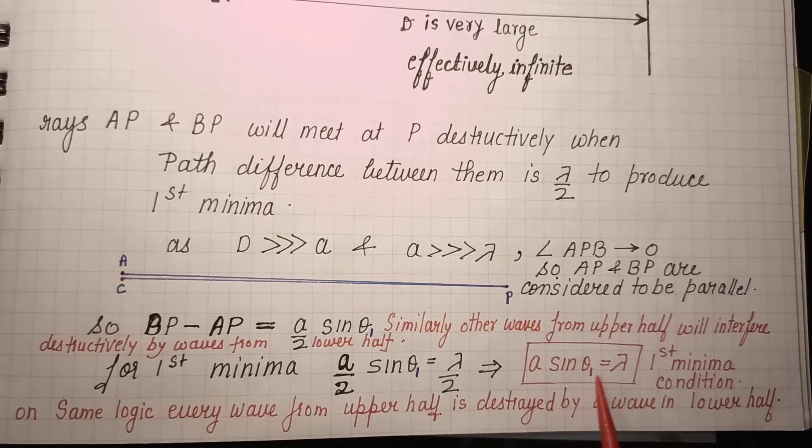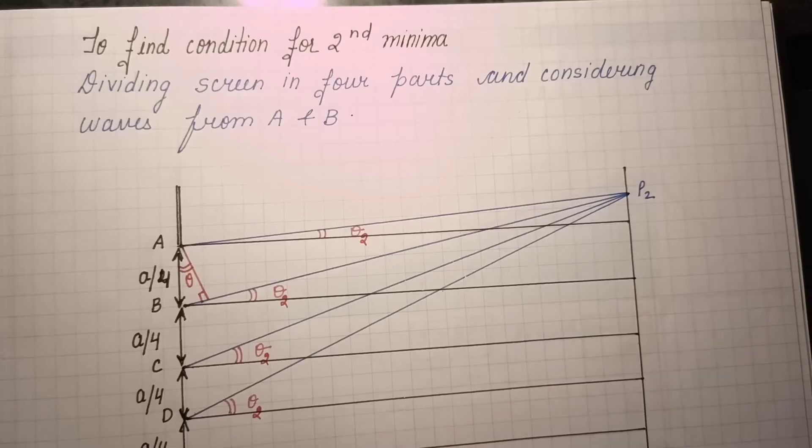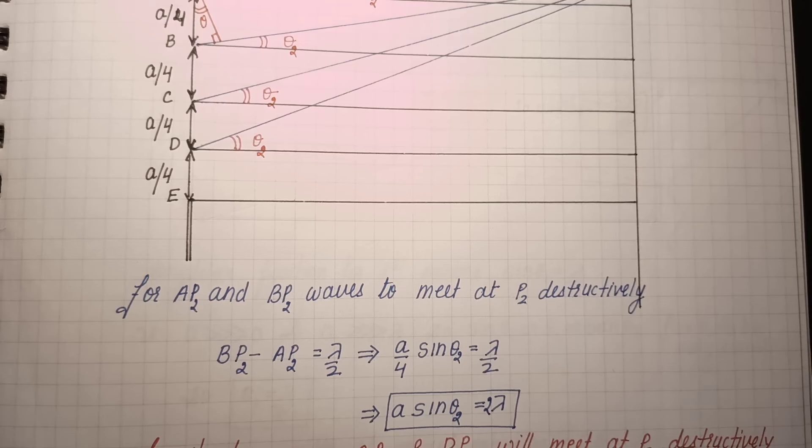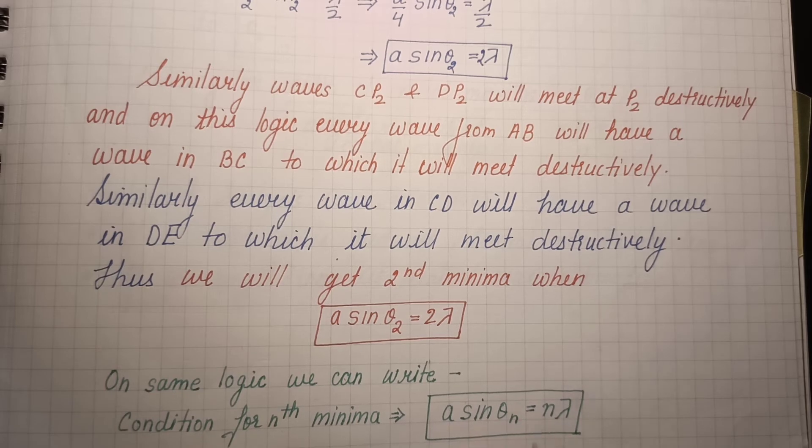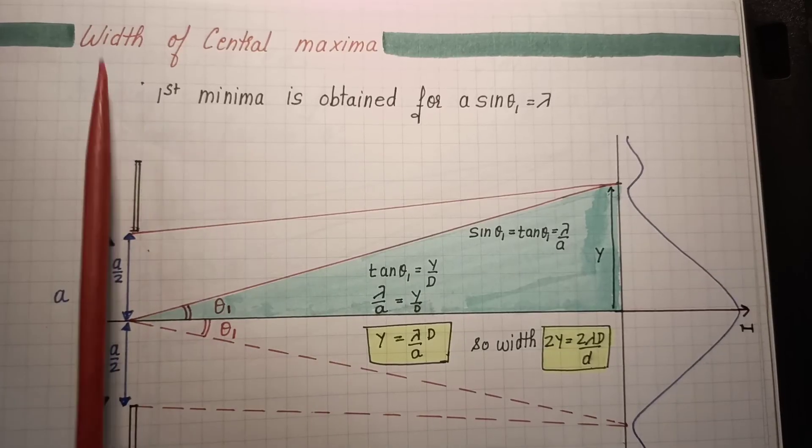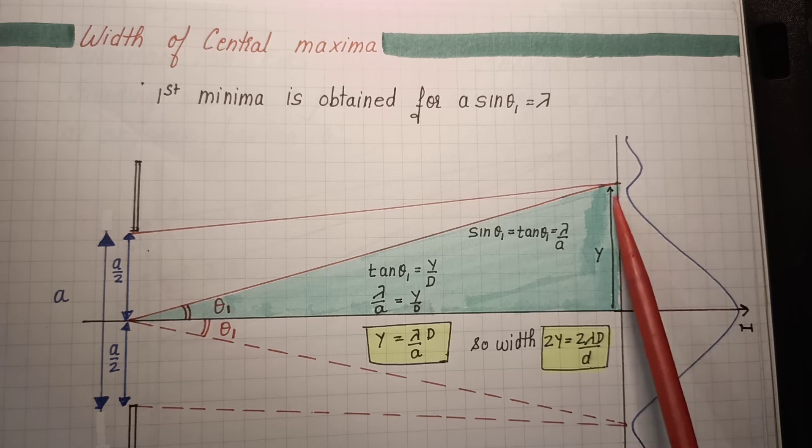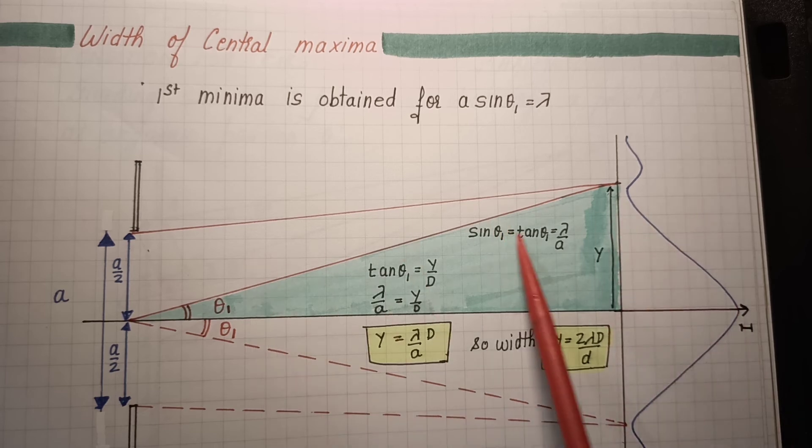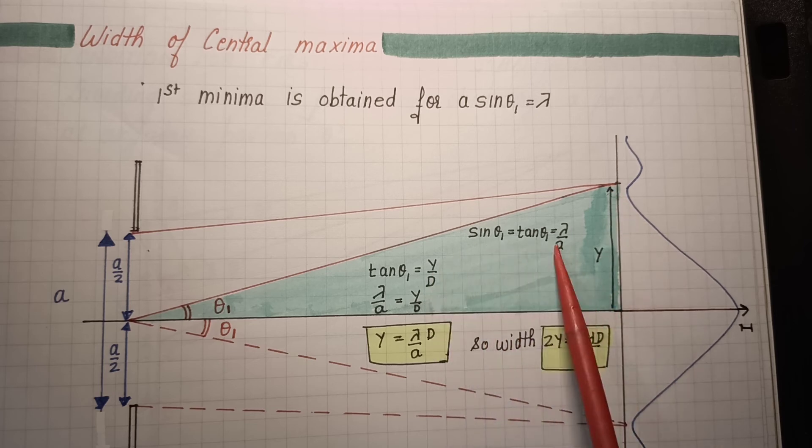This is the condition for first minima. Similarly for second minima, and then the same logic is used to conclude for the nth minima. This expression gives you the width of central maxima. The width of central maxima is going to be very important this year. Either a numerical or some question for the central maxima will be asked, and that totally depends upon the first minima condition. This is first minima condition and that leads to the width of central maxima.